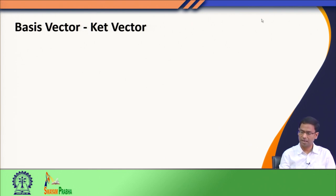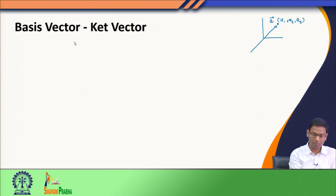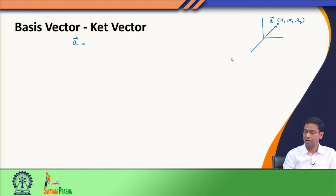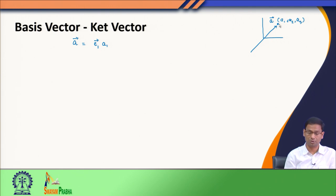Suppose we have a vector in the three-dimensional space in the familiar Cartesian coordinate system. Suppose we say there is a vector a which is given by a1, a2, a3 as the three coordinates. The way we write this vector is by defining some unit vector along the x, y, or z axis. Keeping it general, I define one unit vector e1 along which my amplitude is a1.